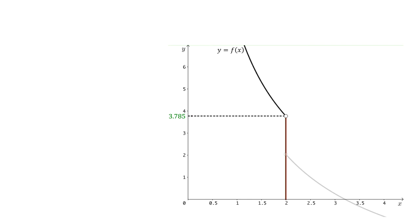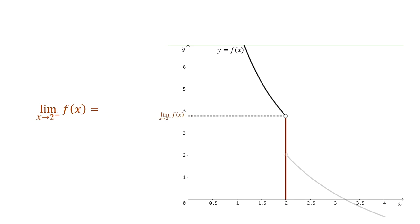Since we are only considering values of x that are less than 2, we write the limit like this. In this new notation, a negative sign has been added as an exponent of 2, and we call this the limit as x approaches 2 from the left of f(x). The value of this limit would be the height of the hole created at the endpoint. Since the hole is the same as in our original function, the height of this hole, to three decimal places, would still be 3.785.